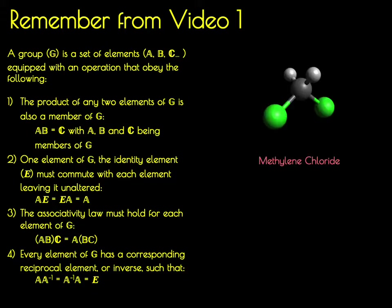In a different video we learned how to assign point groups. For example, methylene chloride belongs to the C2V point group because it contains an identity element, C2, sigma V, and sigma V prime. Of the four rules that the set must obey, the only obvious one is that it contains an identity element E.